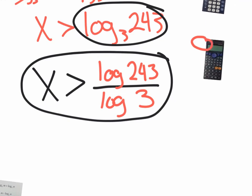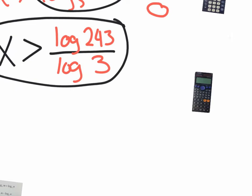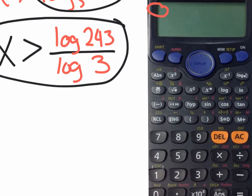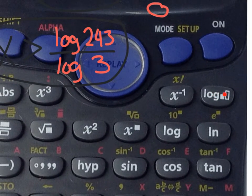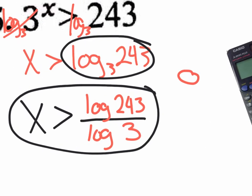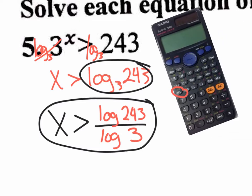If you're lucky enough to grab a Casio, it has a button that will actually do the logarithm for any base without having to change the base. So with the Casio, you could just type in that button, put the 3 in the base spot, put 243 in the other spot, and hit equal, and it'll give you your answer. You might be thinking: why do I even want to know this change of base formula if the Casio can do it for me? Well, the truth is you do need to know it.